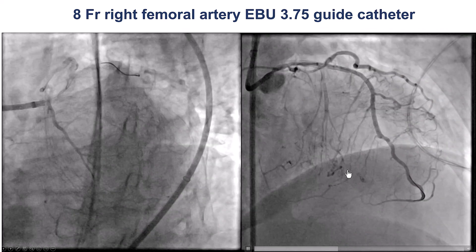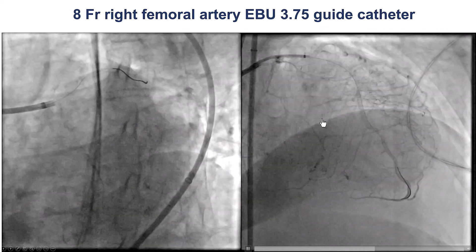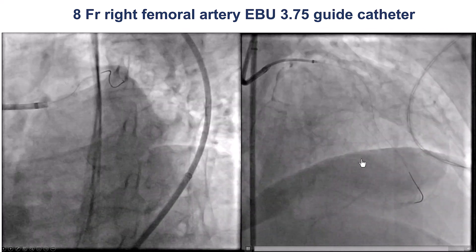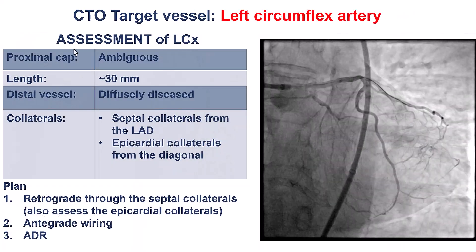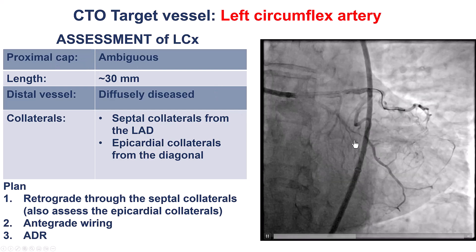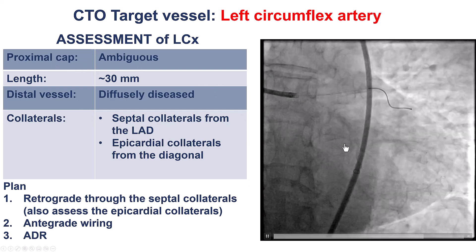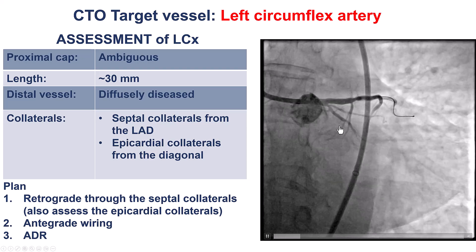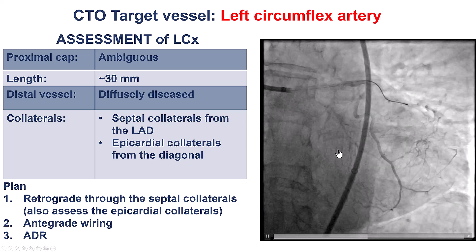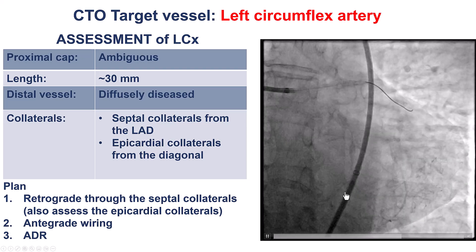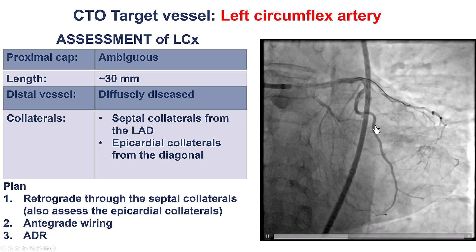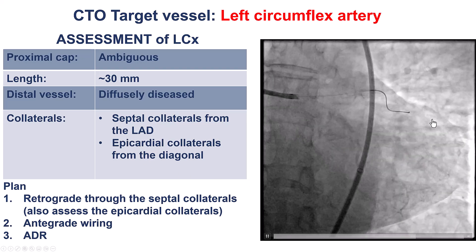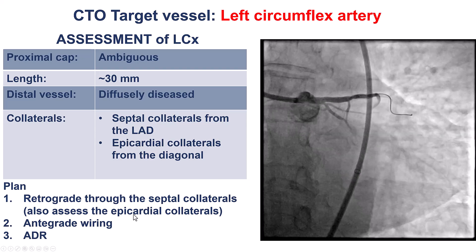Those collaterals can be seen a little better in the aero-cranial view. In summary, we have an ambiguous proximal cap and an occlusion length of approximately 30 mm. The distal vessel is small and diffusely diseased, filling through septal collaterals from the LAD, and there are also some epicardial collaterals from the diagonal.